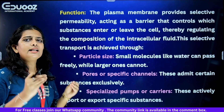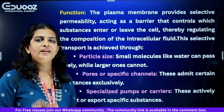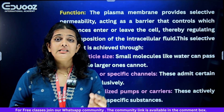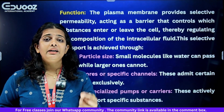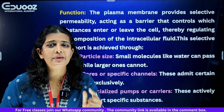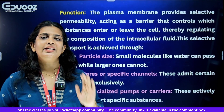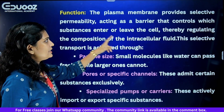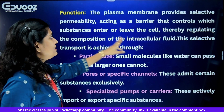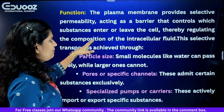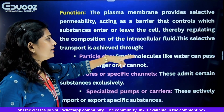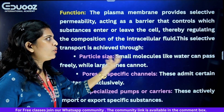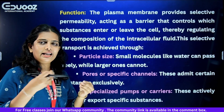The function of the plasma membrane: the plasma membrane is semi-permeable in nature. The plasma membrane provides selective permeability, acting as a barrier that controls which substances enter or leave the cell.